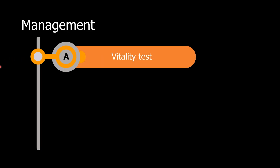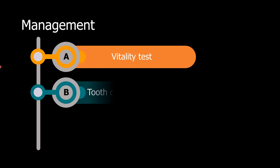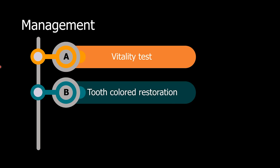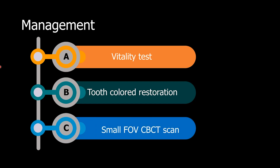In our case, we should check the vitality of the right central incisor. We may have to do a colored restoration. The left central incisor was already discolored, so it might require a restoration or a crown to improve aesthetics. You may also want to get a small field of view CBCT scan, which will give us information about the fractured root and the apical PDL space of the right central incisor.